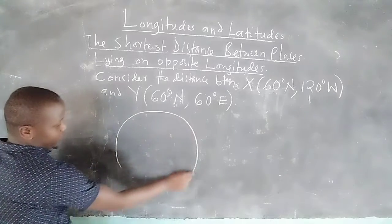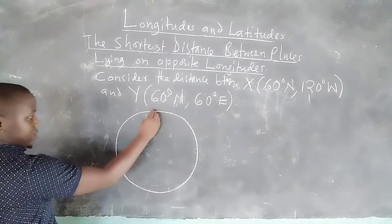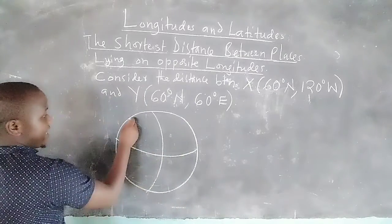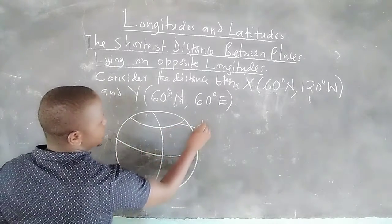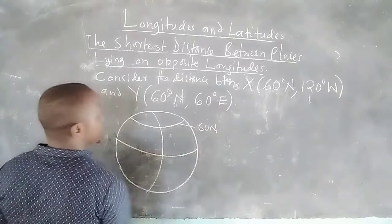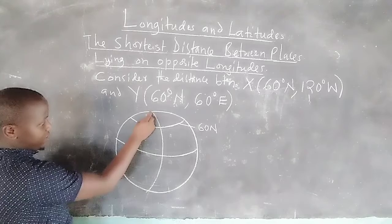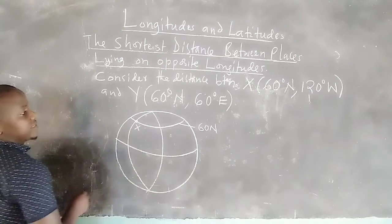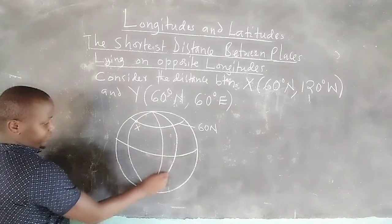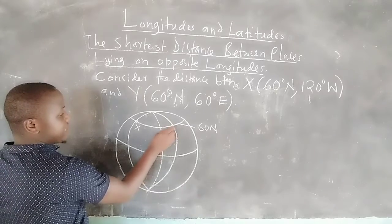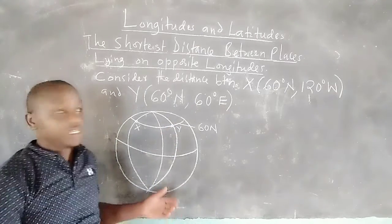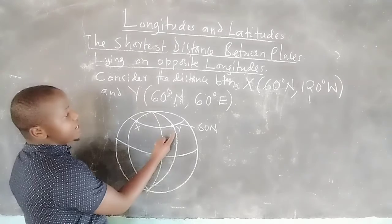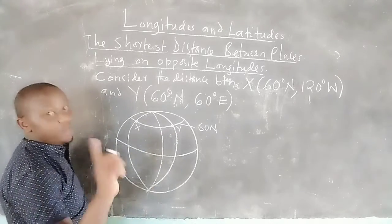Let me sketch these two places. We have the prime meridian and the equator. Along 60 degrees North we have 120 degrees West, which gives us place X, and 60 degrees East, which gives us place Y. You'll realize that between X and Y we have 180 degrees of longitude difference.